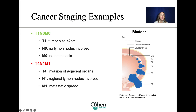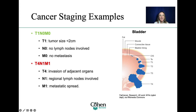Cancer staging example one: T1N0M0. T1 means the tumor size is less than 2 centimeters — a small cancer. N0 means no lymph nodes are involved. M0 means no metastases.